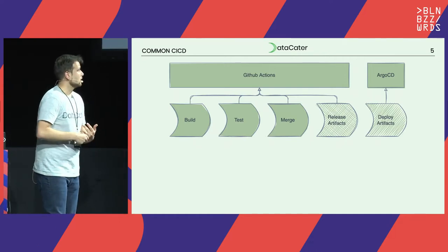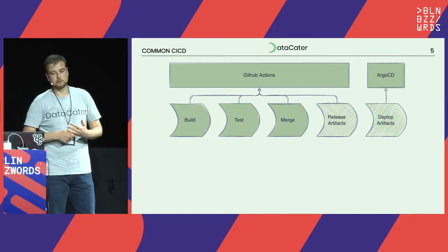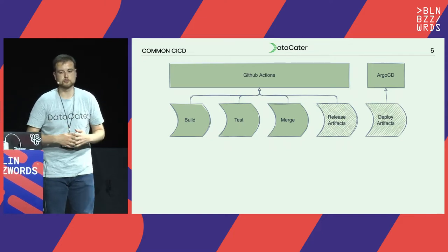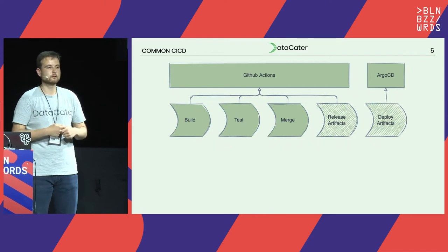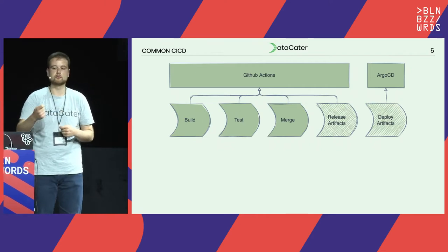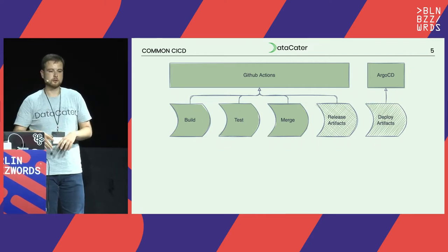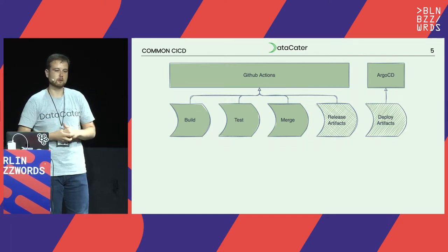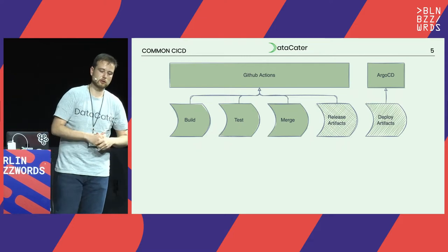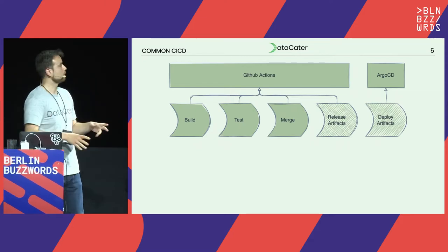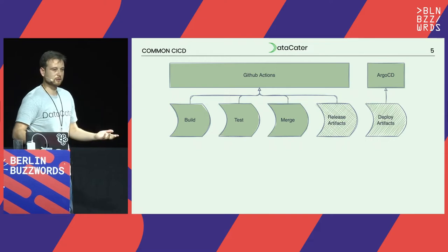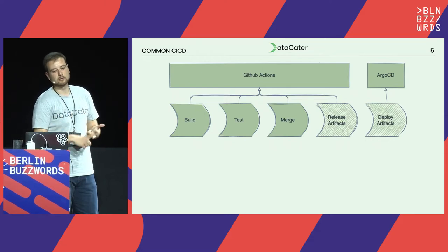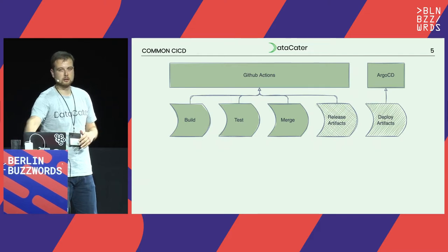Let's talk CI/CD and what GitOps actually is. We have these stages. For us, we use GitHub — GitHub Actions for building, testing, merging things to our deployable branch, and then releasing artifacts. We use Argo CD to use these artifacts in our Kubernetes manifests to actually deploy them to our production cluster or staging cluster. With this whole picture, there is one major question: where is the state? Where is my code? What state is my Kubernetes cluster in?